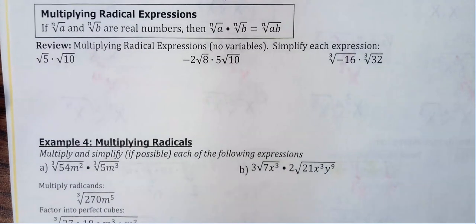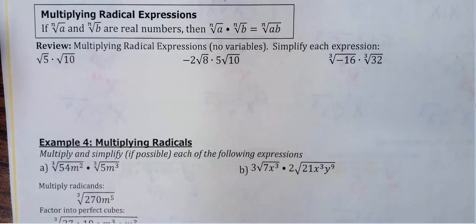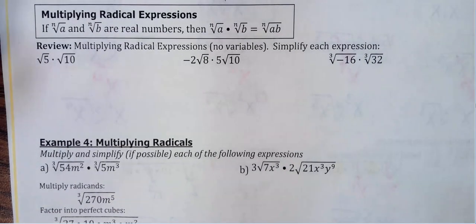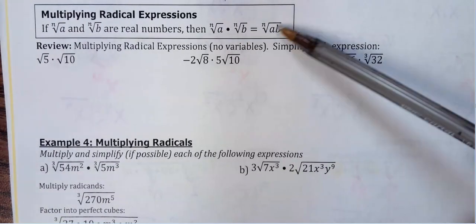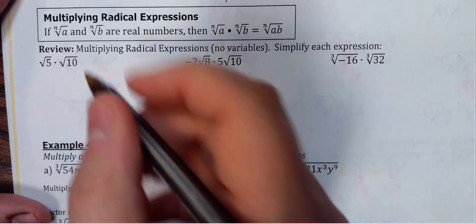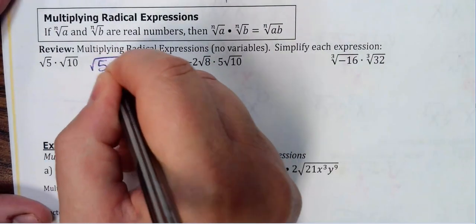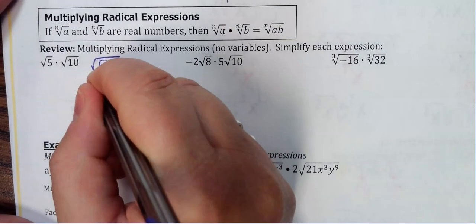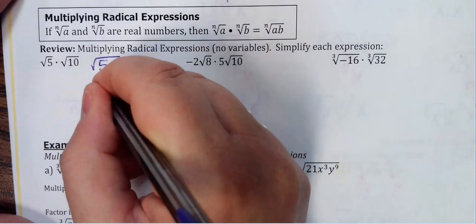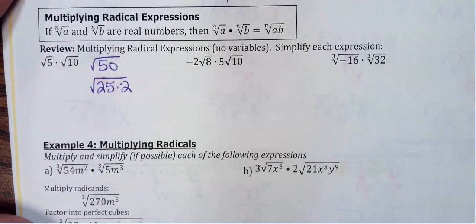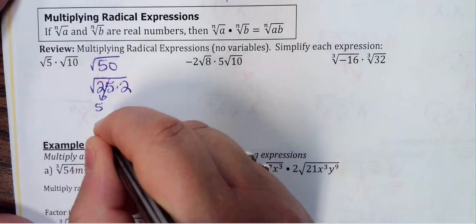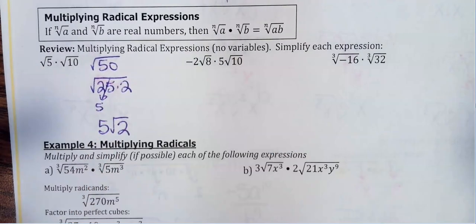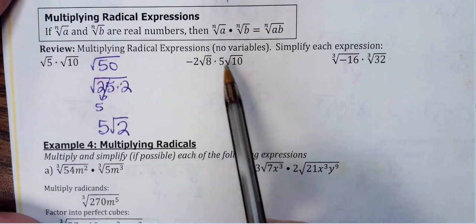Now just a couple of examples adding on multiplication. You can always multiply like radicals together — square roots with square roots, cube roots with cube roots. Just squish them together and multiply. For √5·√10: this becomes √50. The biggest perfect square going into 50 is 25, so rewrite as 25×2. √25 is 5, so that comes out in front, and 2 stays under the square root: 5√2.